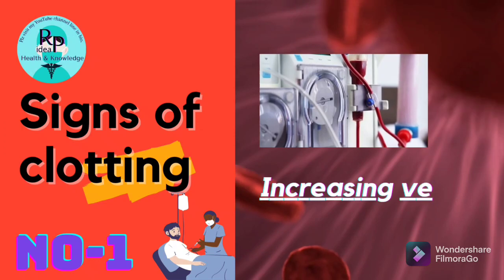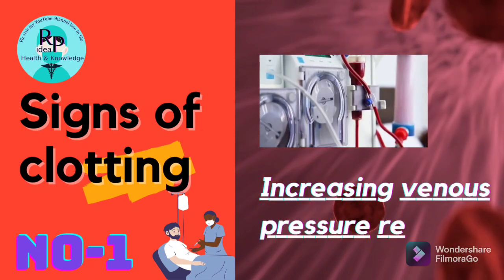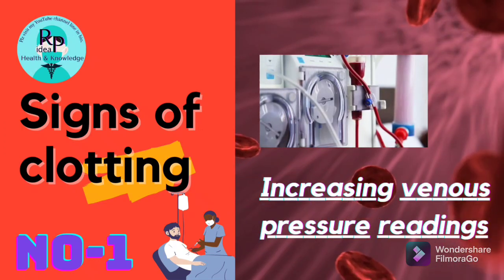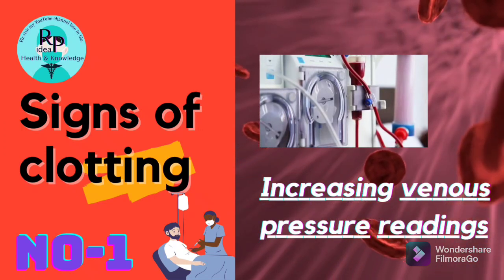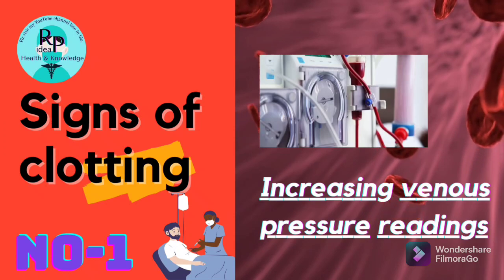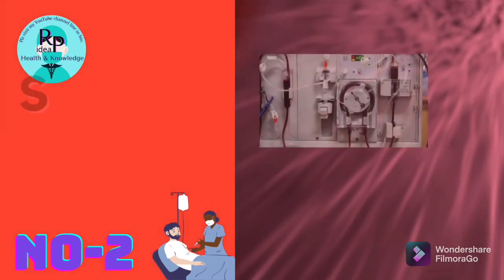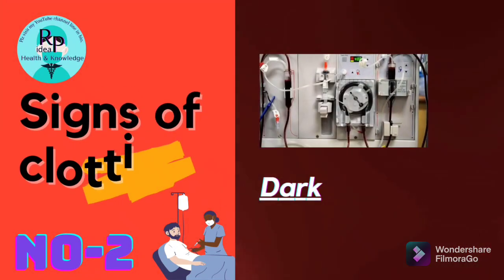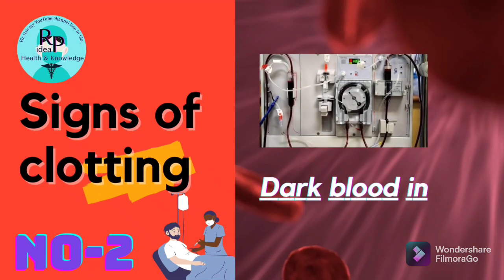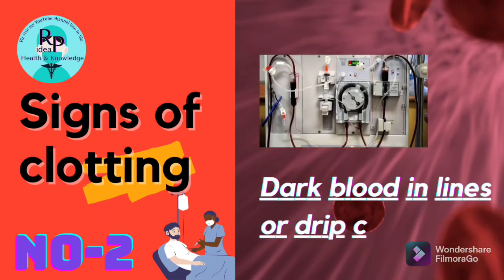Signs of clotting. 1. Increasing venous pressure readings. 2. Dark blood in lines or drip chambers.